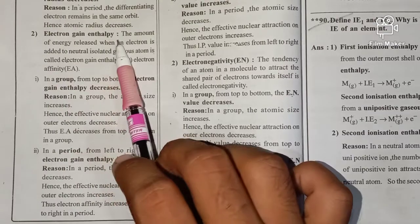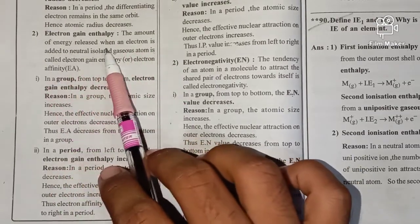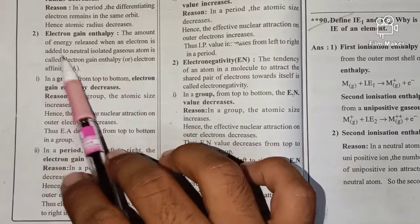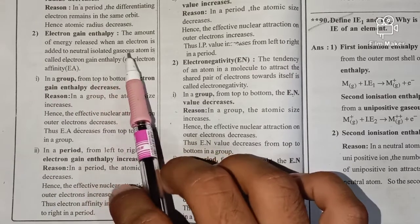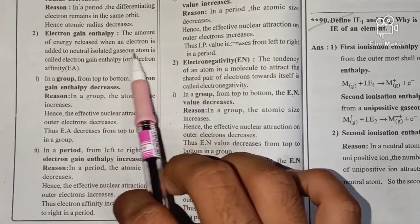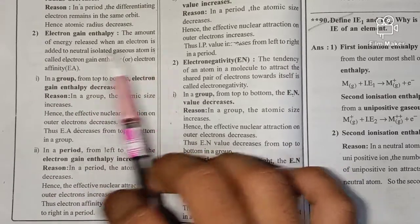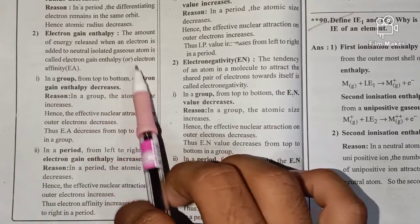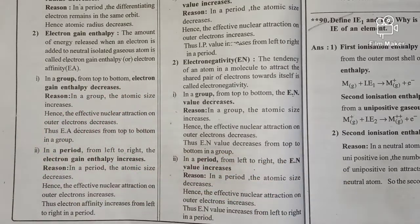The amount of energy released when an electron is added to a neutral isolated gaseous atom is called electron gain enthalpy, or electron affinity.